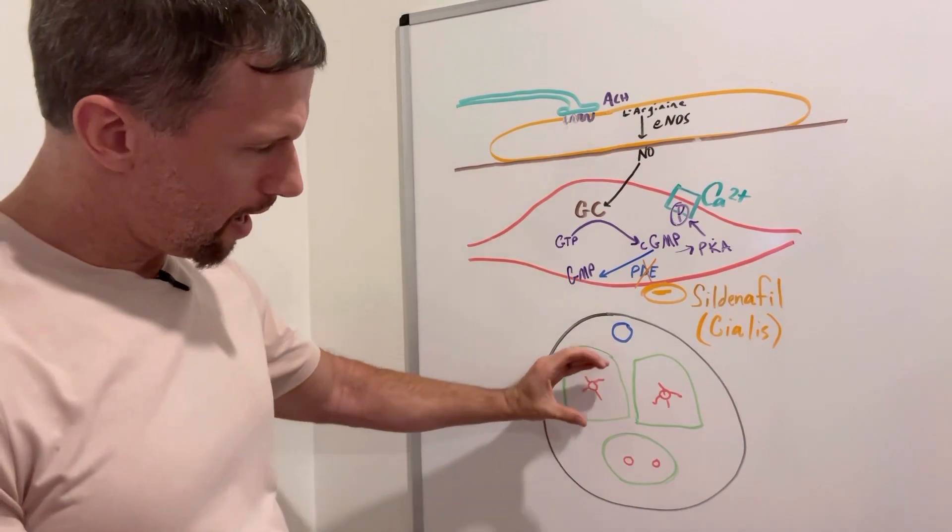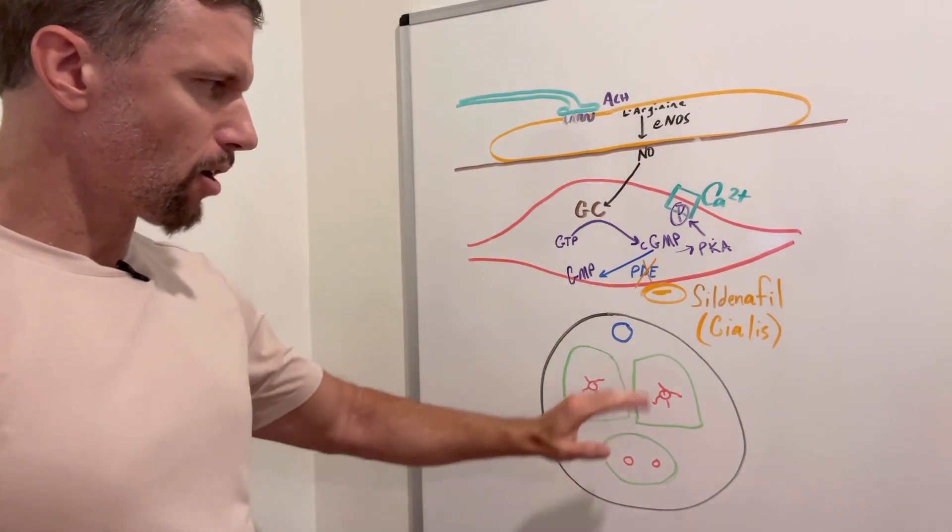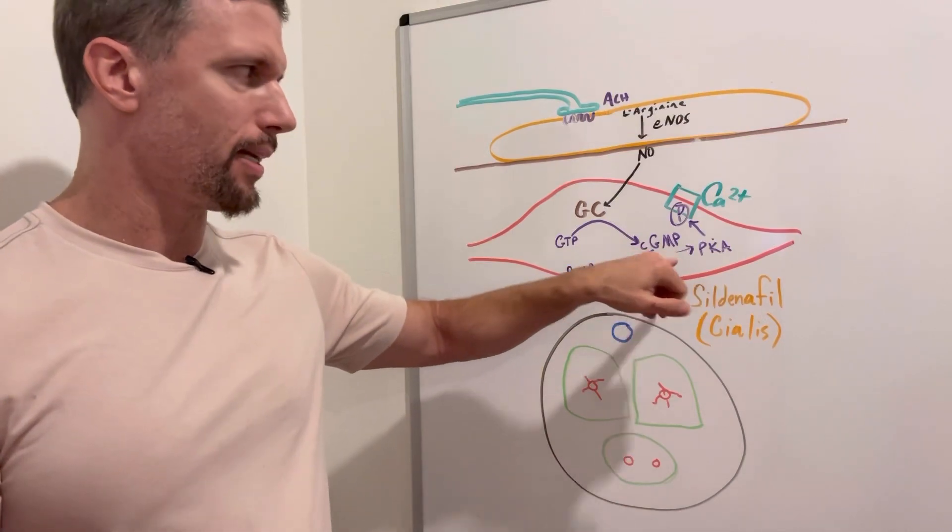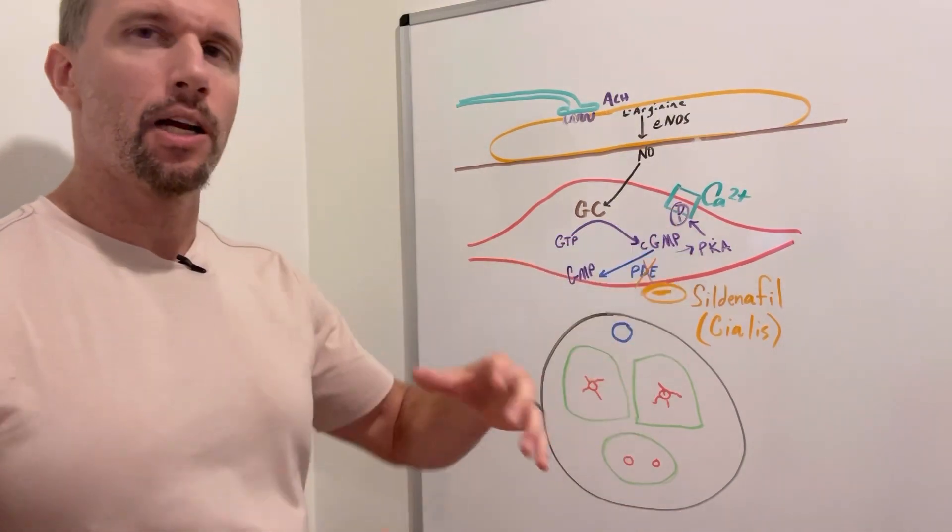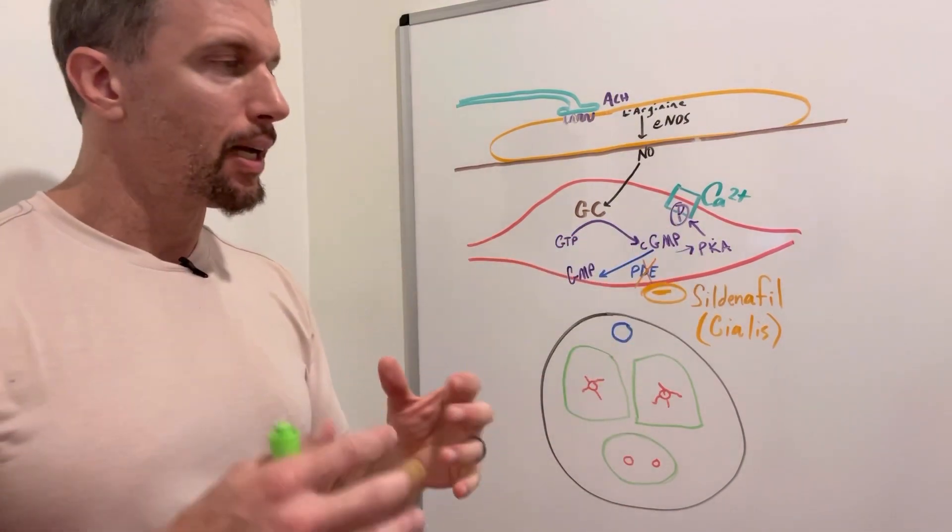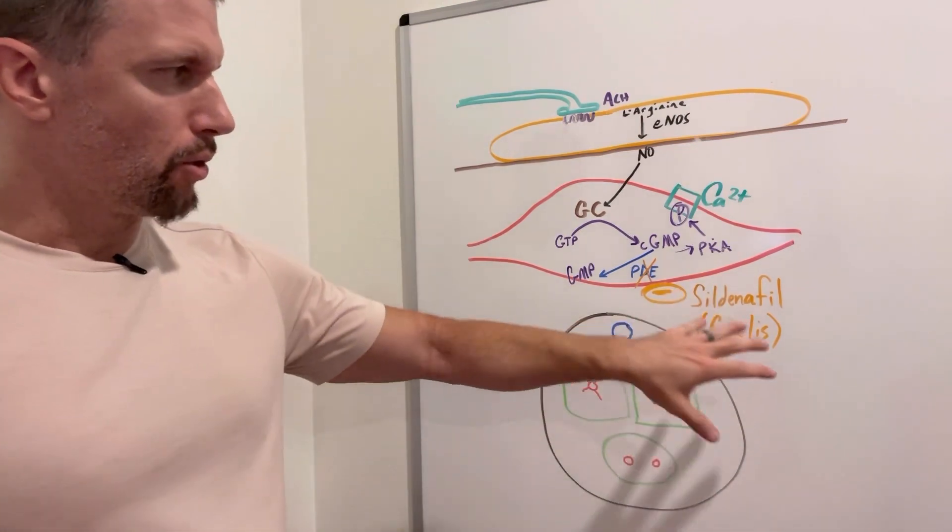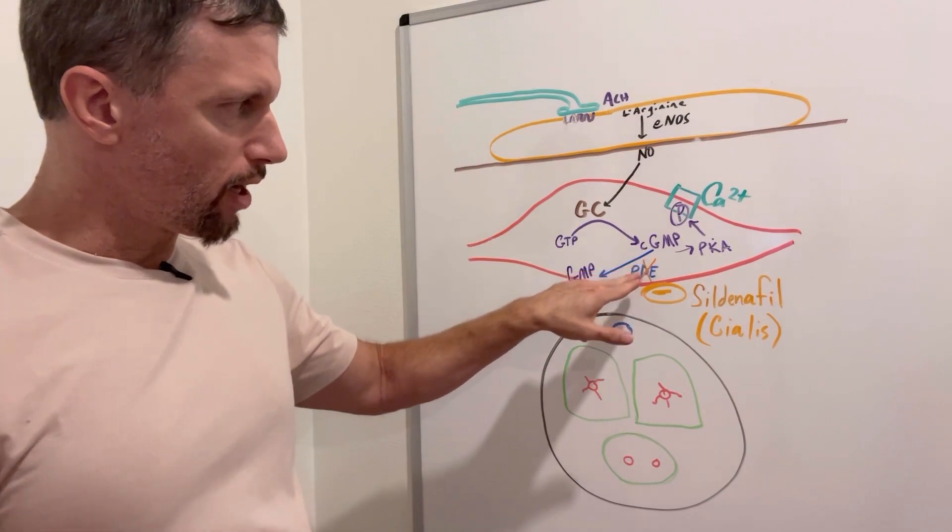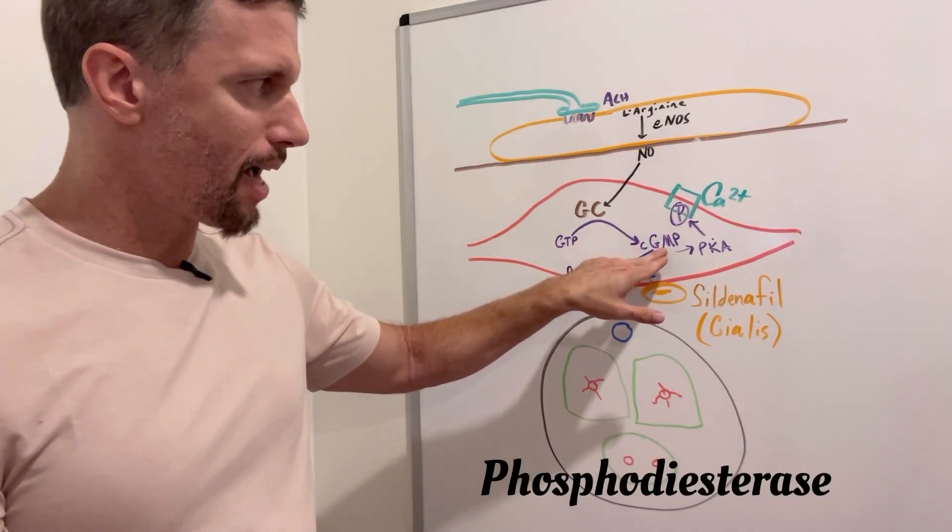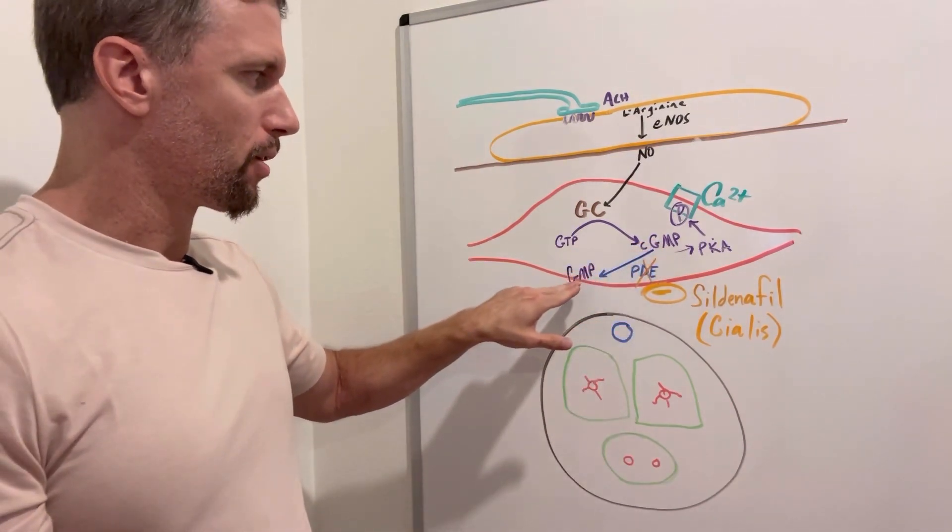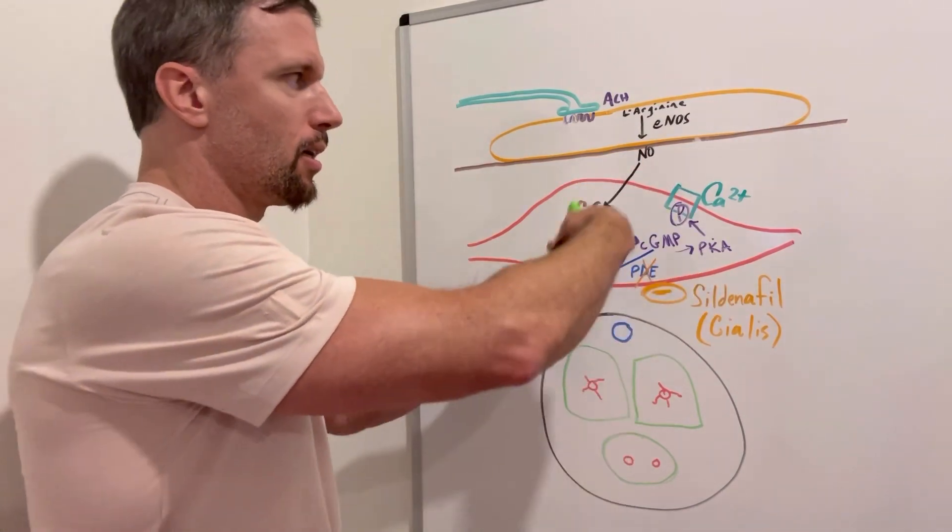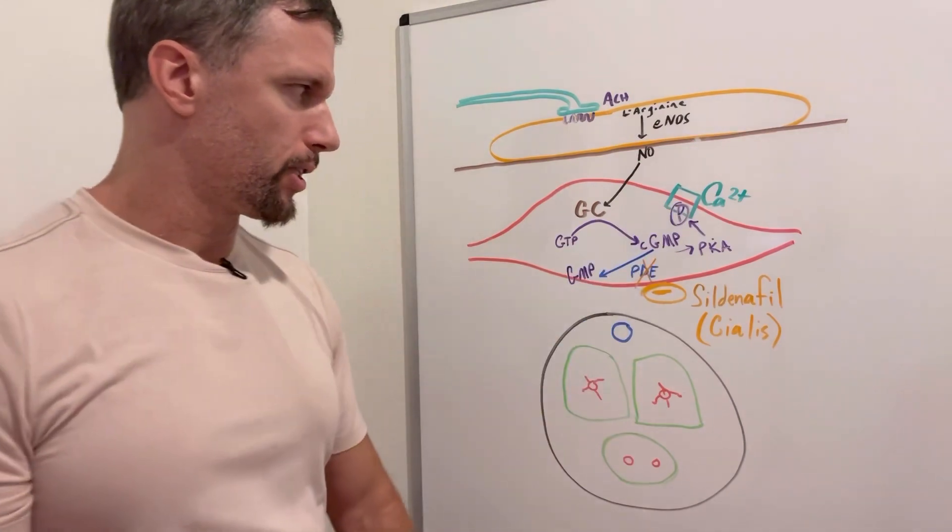So when it relaxes, it causes dilation of these arteries. And as long as that cyclic GMP is active and phosphorylating, you're going to have that relaxation. And that's where the drug comes in. So Cialis comes in as a phosphodiesterase inhibitor, because what phosphodiesterase does is it takes cyclic GMP and converts it to just regular GMP, which no longer sets off this downstream phosphorylation.